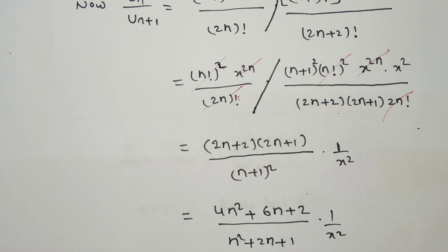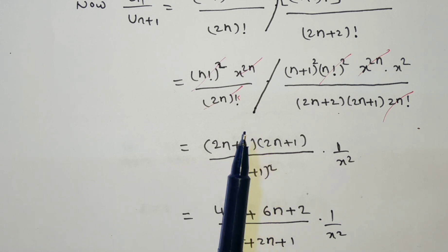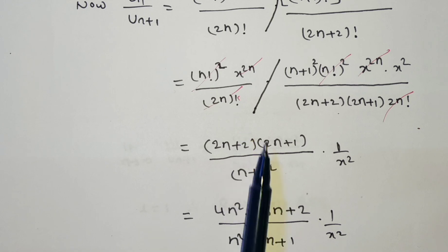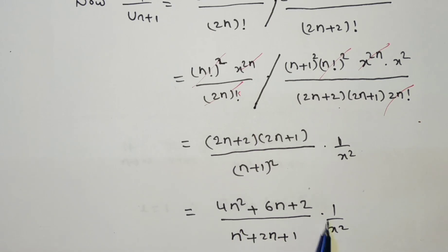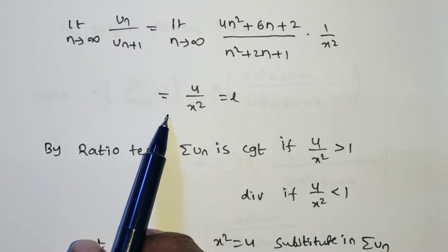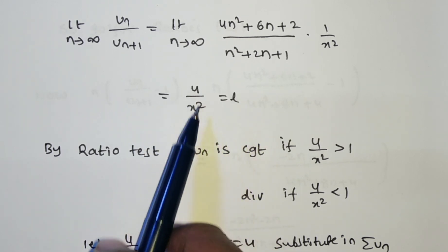Now we apply the limit as n tends to infinity on both sides. Expanding the numerator: (2n+2)(2n+1) = 4n² + 6n + 2. The denominator (n+1)² = n² + 2n + 1. Since both numerator and denominator have degree n², we take the ratio of coefficients of n², giving 4/1 times 1/x². So the limit is 4/x².